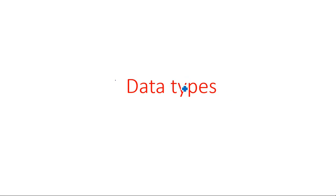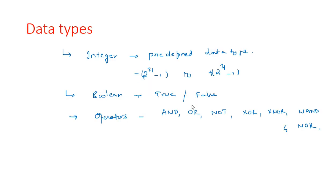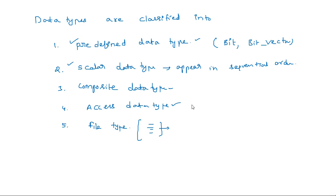Hi everyone. In this video I am continuing the data types in VHDL. In the previous video I started these data types - it may be predefined data types, scalar data types, composite data types, access data types, or file data types. We have seen up to the scalar data types. Predefined data types are bit, bit vector, integer, boolean (true or false) - all these come under predefined data types.